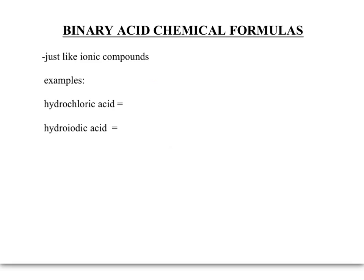When we write the chemical formula for a binary acid, it's just like writing the chemical formula for an ionic compound. We need to look up the charges, then we'll crisscross them, and those will be our subscripts. So let's start with hydrochloric acid.